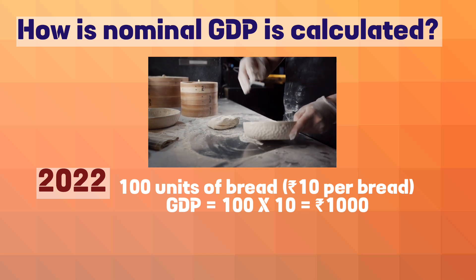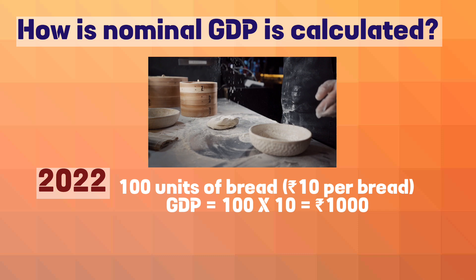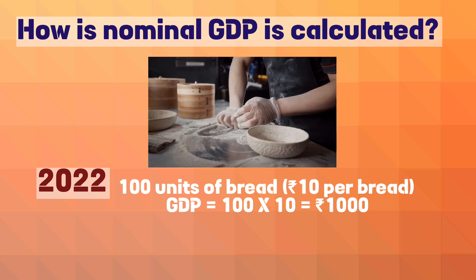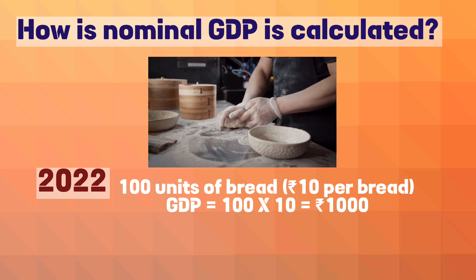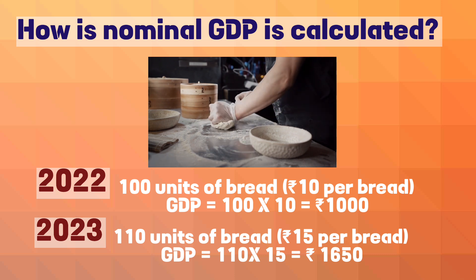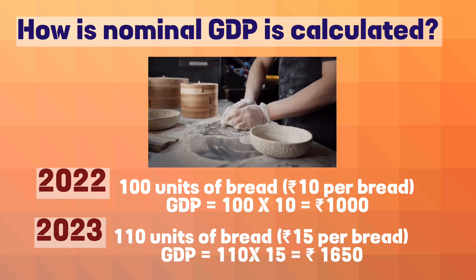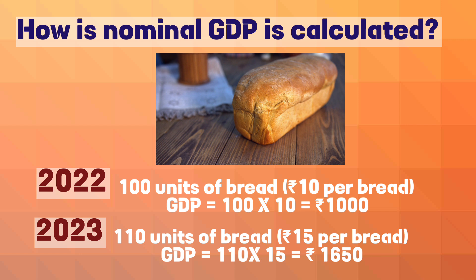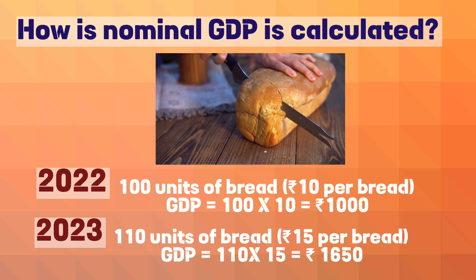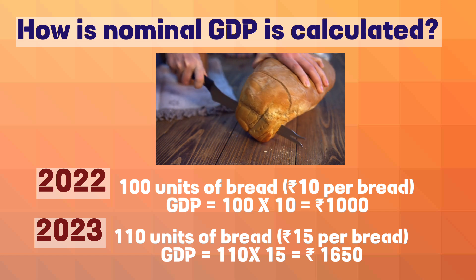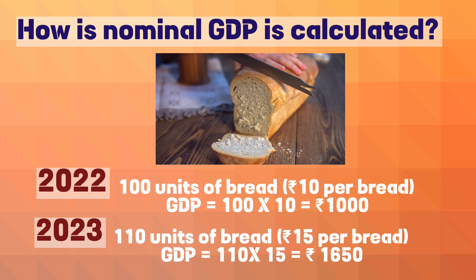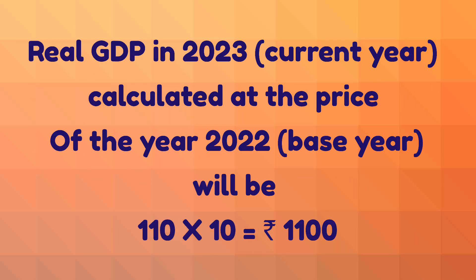Let us suppose a country produces only one product: bread. In the year 2022, it produced 100 units of bread at a price of ₹10 per bread, so GDP at current prices was 100 × 10 = ₹1,000. In the year 2023, the same country produced 110 units of bread at a price of ₹15 per bread, so nominal GDP will be 110 × 15 = ₹1,650.